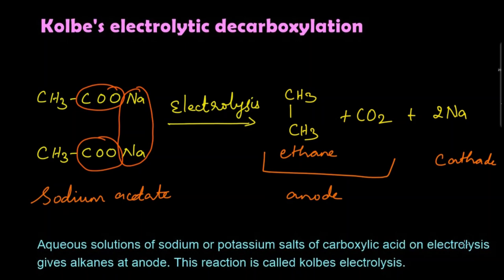To summarize: when an aqueous solution of sodium or potassium salt of a carboxylic acid undergoes electrolysis, it gives alkanes at the anode. This reaction is called Kolbe's electrolysis. Here we electrolyze sodium acetate and get ethane, which is deposited at the anode, while sodium is deposited at the cathode.